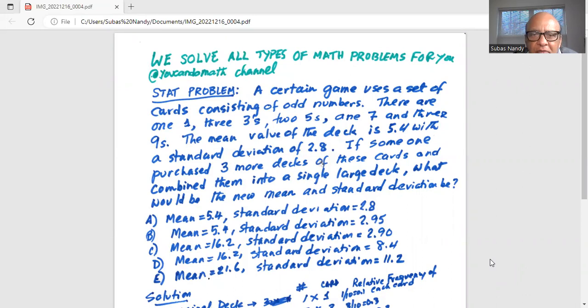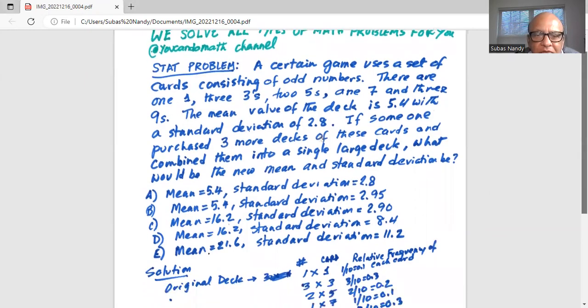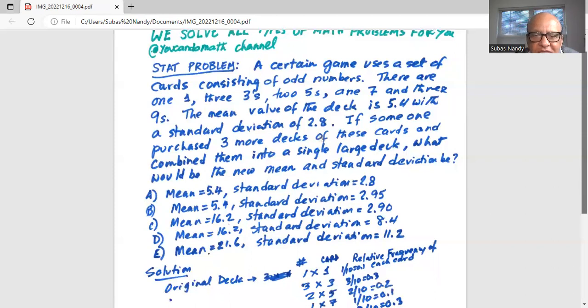If someone purchased three more decks of these cards and combined them into a single large deck, what would be the mean and standard deviation? Option A: mean is 5.4, standard deviation is 2.8. Option B: mean is 5.4, standard deviation is 2.95. Option C: mean is 16.2, standard deviation is 2.90. Option D: mean is 16.2, standard deviation is 8.4. And option E: mean is 21.6, standard deviation is 11.2.